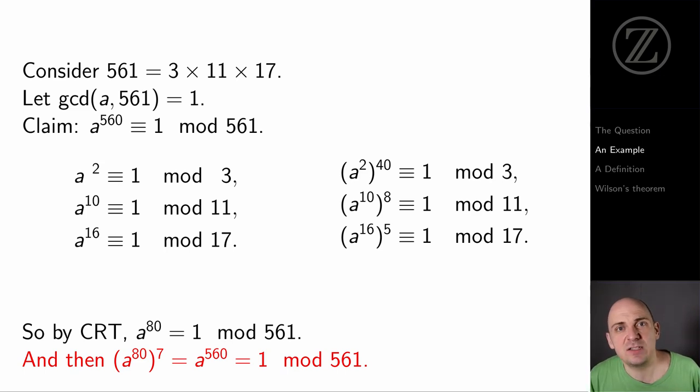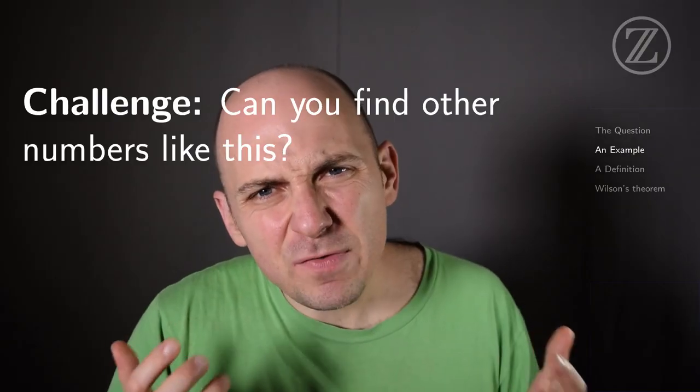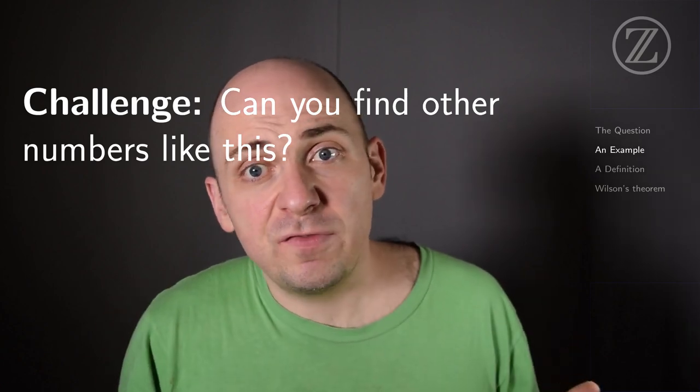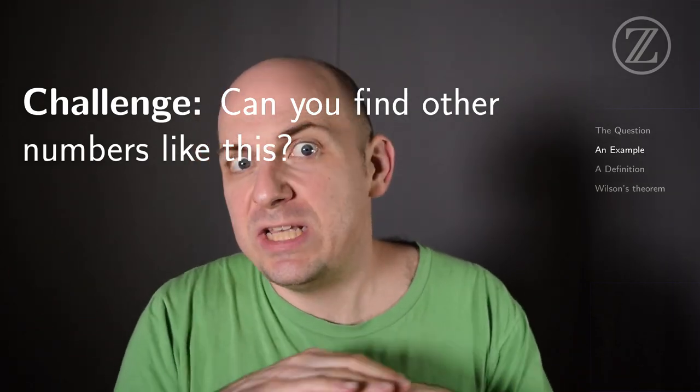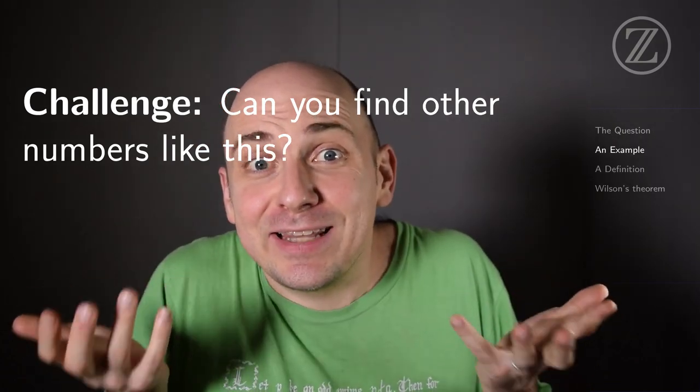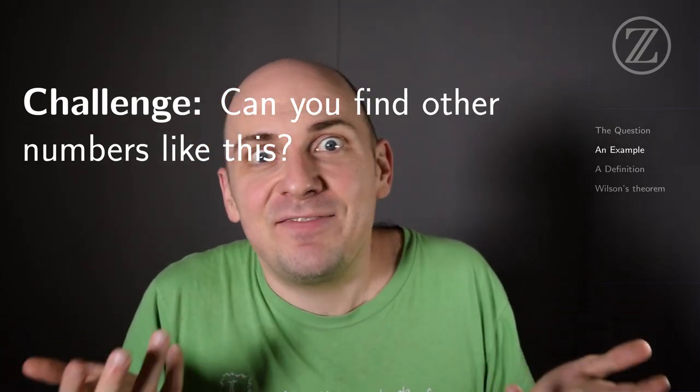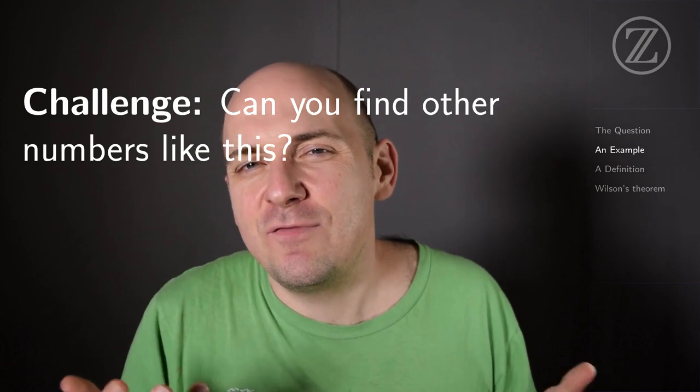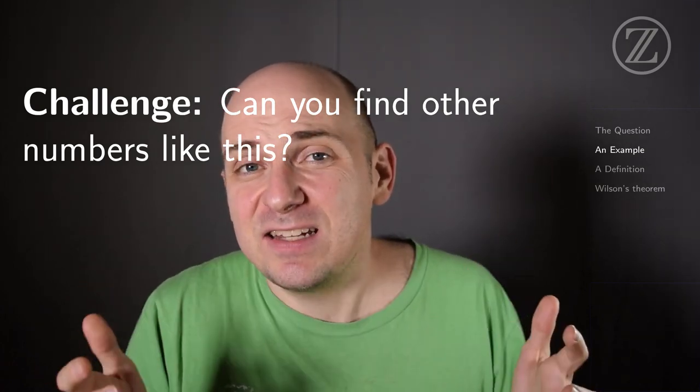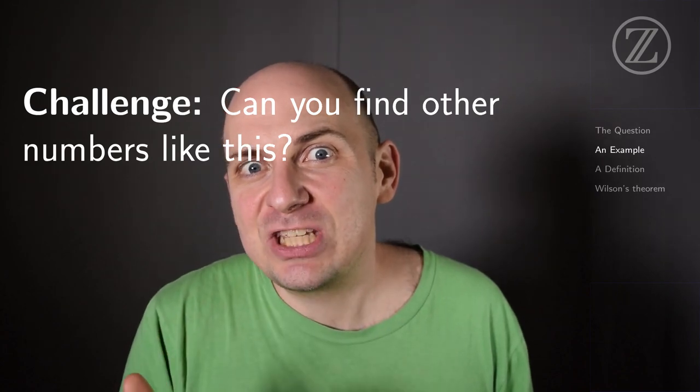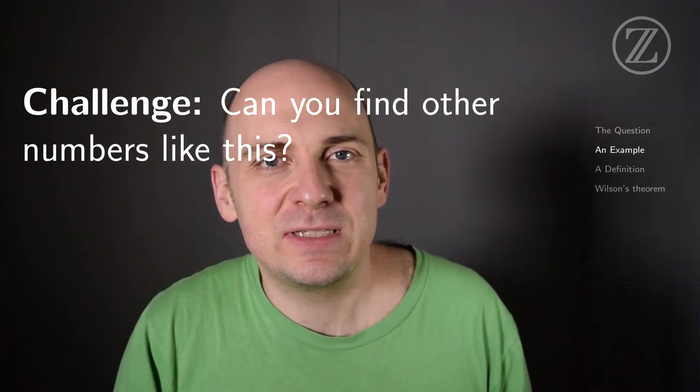So despite the fact that 561 is not a prime number, it still satisfies the conclusion of Fermat's Little Theorem. So it's kind of a funny thing. From the point of view of Fermat's Little Theorem, at least, the number 561, which isn't prime, definitely looks like it's a prime number. I mean, it's got the same kind of conclusion in Fermat's Little Theorem. If a is relatively prime to 561, that's enough to conclude that a to the 560th power is 1 modulo 561.